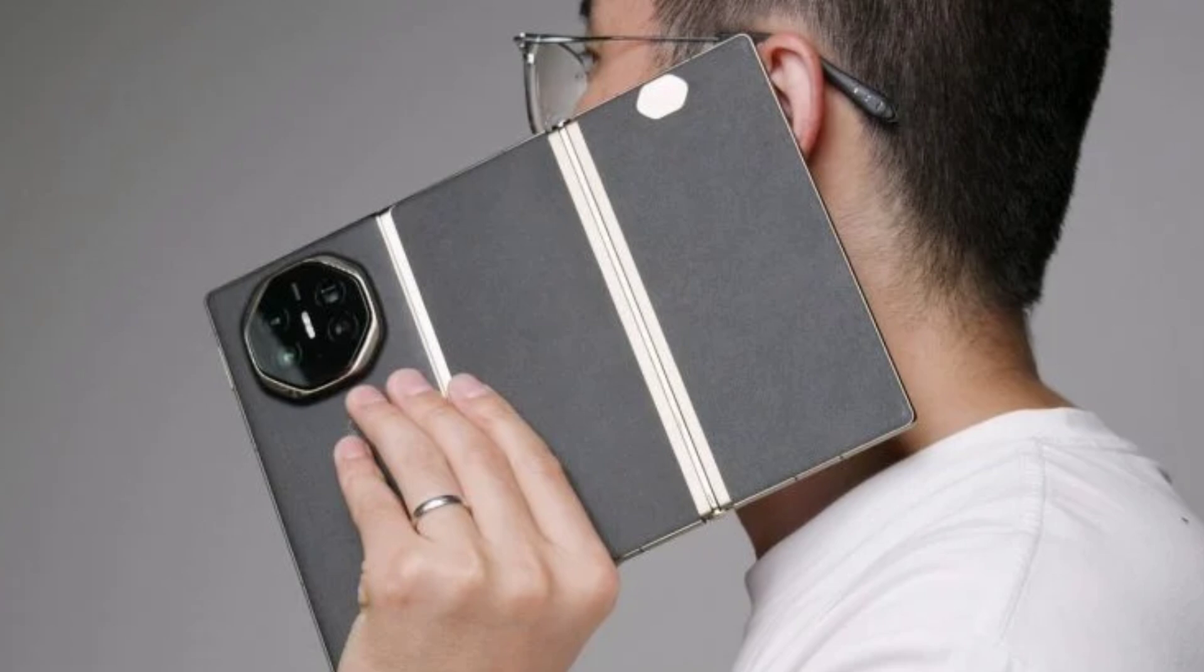About the hinge, the Mate XT can be hovered, but it doesn't seem to be optimized accordingly. The camera app doesn't split into two parts when the phone is opened halfway. And if you put it on a table, you'll notice that it's not 100% flat.